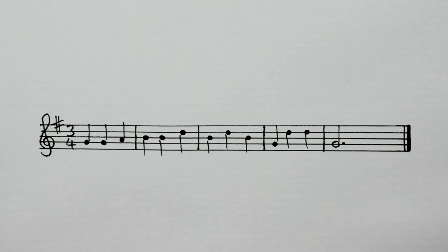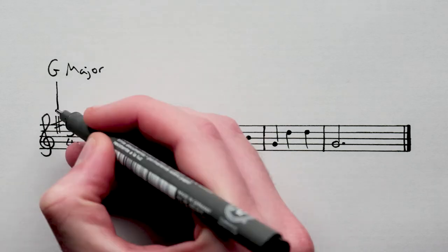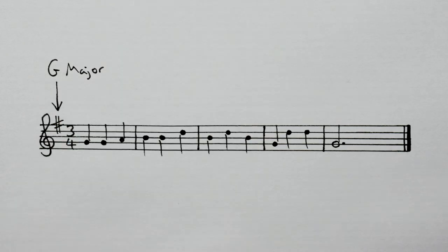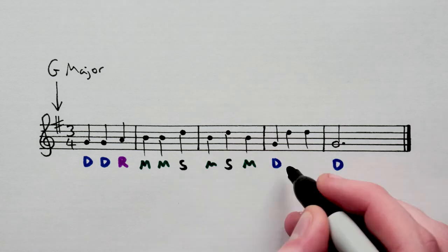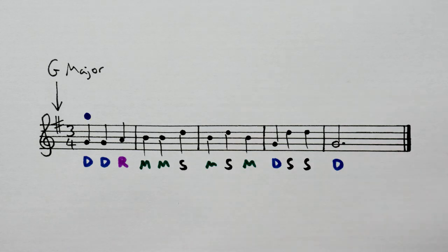And how about a tune in G major? So, in the key of G major, we're gonna sing Do for all the Gs, Re for all the As, Mi for all the Bs and So for all the Ds.